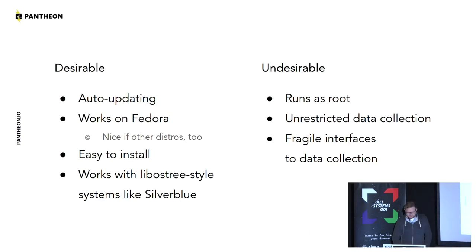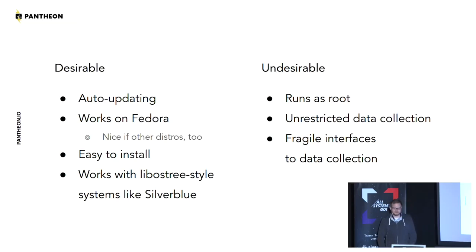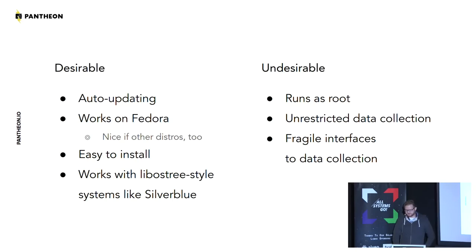Starting with the constraints: this is about avoiding undesirables, because a lot of this is super easy if you don't care about basically installing a rootkit on people's boxes and giving IT access. Another issue we've run into is fragile interfaces to data collection — some agents will update the version of Fedora and suddenly the agent breaks, because they're often relying on running a shell command and parsing the output. It's unbelievably nasty what's in a lot of the monitoring tools out there.